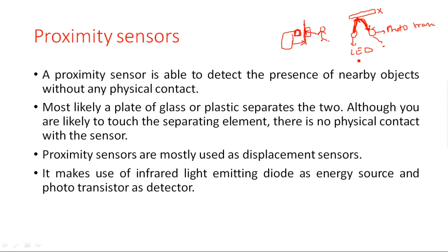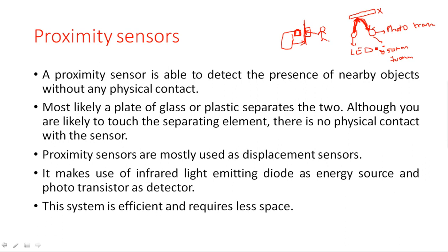You may wonder why we cannot see the LED light. It works beyond 850 nanometers. If the wavelength of light is below 650 or 700 nanometers, the light is visible to us. But above 700 to 750 nanometers, we cannot see the light. So proximity sensors use high-wavelength LEDs where the light is not visible to human beings. This system is efficient and requires very little space.